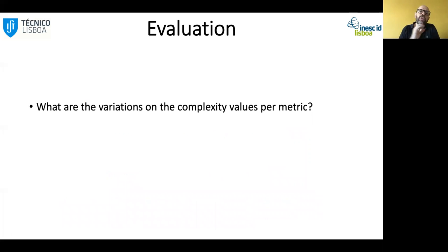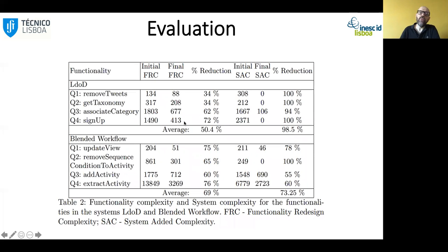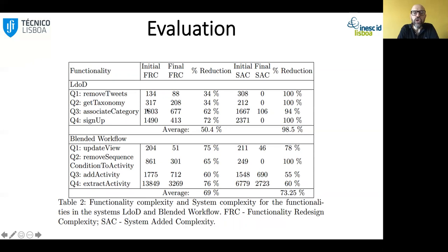We also did a deeper analysis of the variations in the complexity measures. We found that the percentage of reduction for each functionality varies with the functionality itself. Another observation is that some functionalities with an initially higher complexity value achieve a higher reduction afterwards.